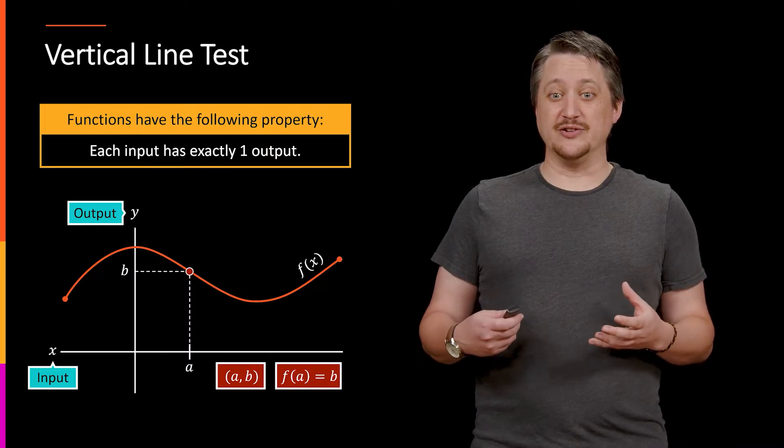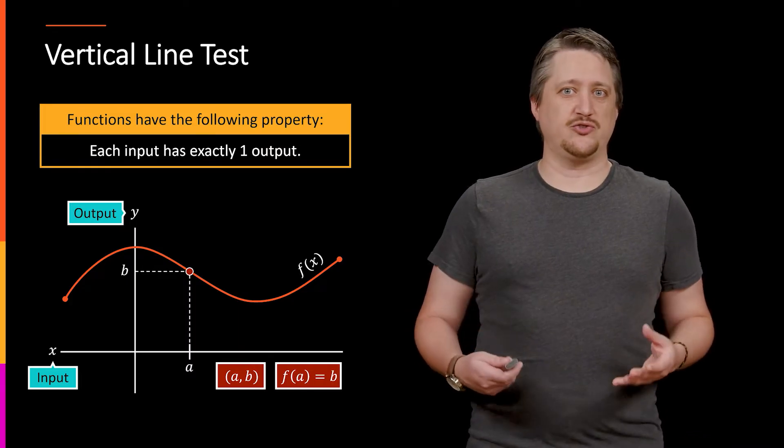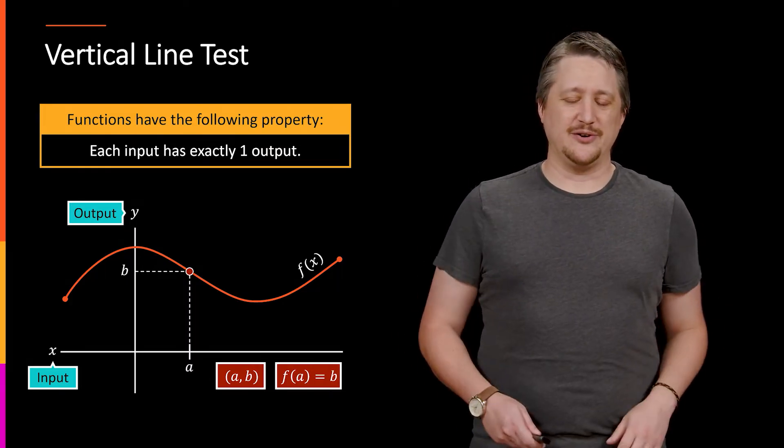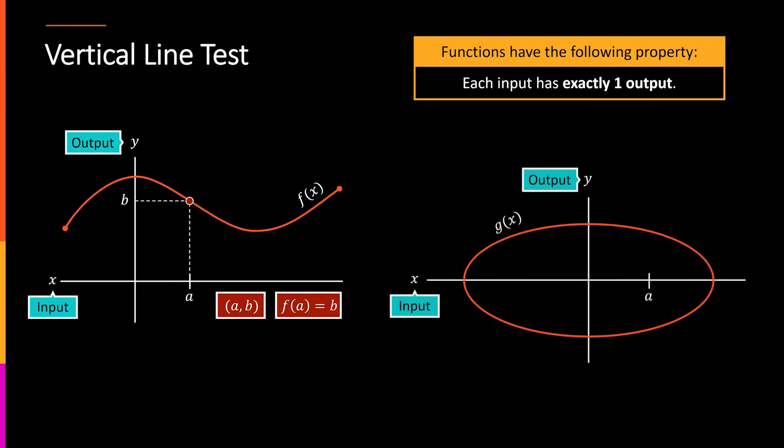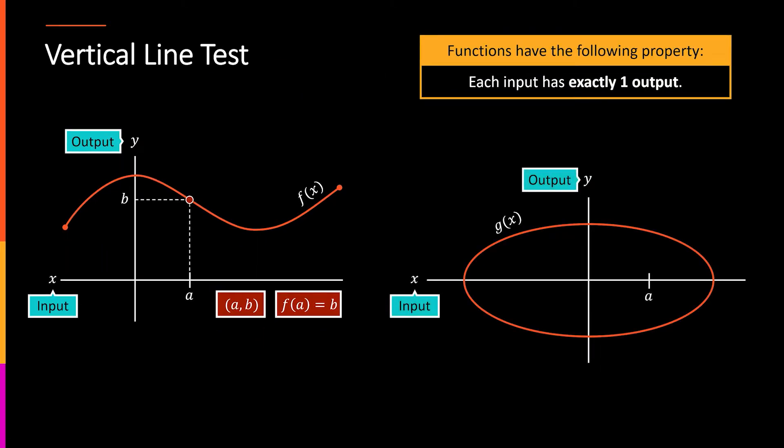Let's say that we have this other thing here, this oval that is represented by g(x). Our curve is now this big oval. Similarly, we're going to look at that a value as our x value and look at what the corresponding y value or values might be.